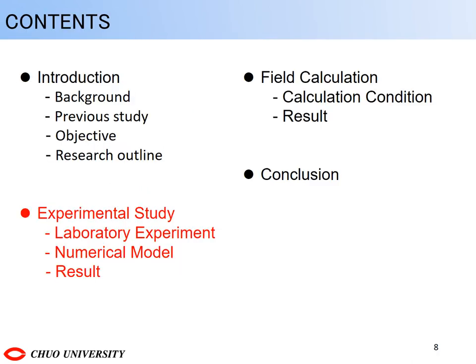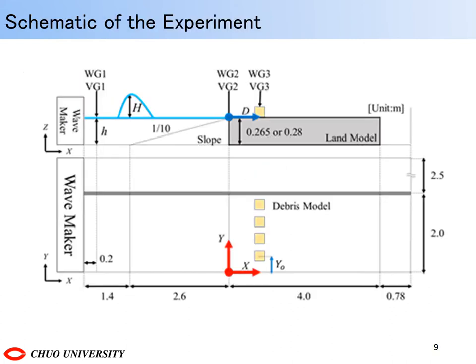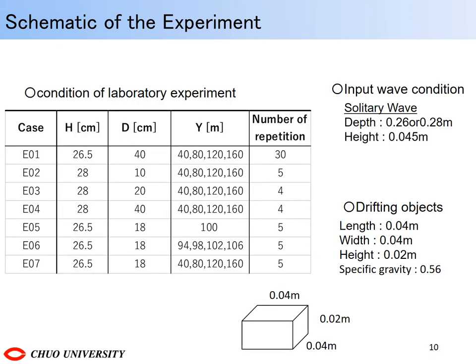Next is about experimental study. This is the scale of the hydraulic experiment. The experimental water tank was 8.78m long, 4m wide, and 58.5cm high. The width was set to 2m by using a partition plate. These are the experimental conditions for each case. I changed the arrangement of the drifting objects and realized 7 cases. A 4.5cm solitary wave was created as the wave-forming condition. The drifting model is 4cm long and wide and 2cm high and has a specific gravity of 0.56.